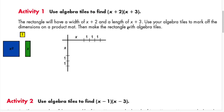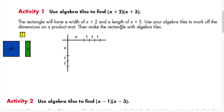In algebra tiles, the objective is to create a rectangle, so that the rectangle represents the area — the product of the polynomials. For example, if you have (x+2)(x+3), x+2 will be your width and x+3 will be your length, and the product will be the area of the rectangle. So the rectangle will have a width of x+2 and a length of x+3.